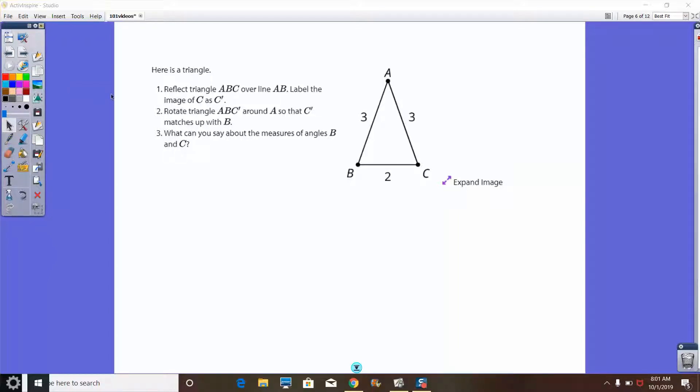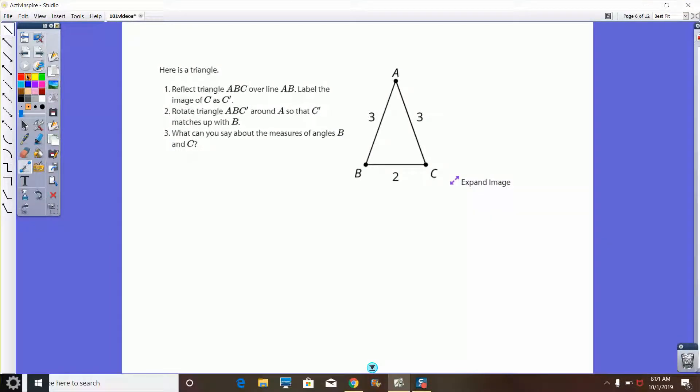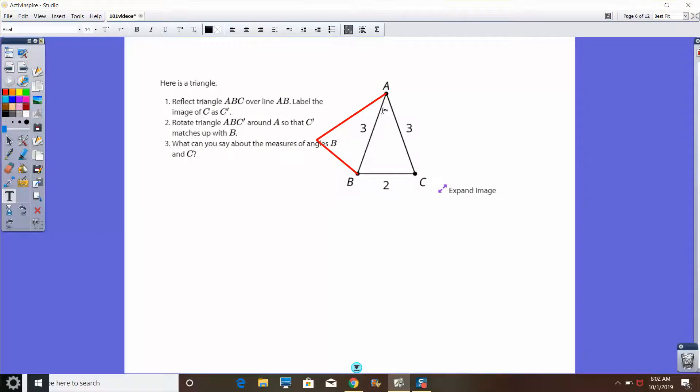Here we have a triangle, and our job is to reflect this triangle. Reflect triangle ABC over line AB and label the image of C as C prime. To do this, the best way is to use tracing paper. If we trace this triangle and then use AB as our mirror, what would we see on the other side? If we do this properly, by reflecting this whole triangle ABC over this line, we're going to end up with a triangle that looks like this. We fold over AB, and this would go over here. We're going to call that C prime.